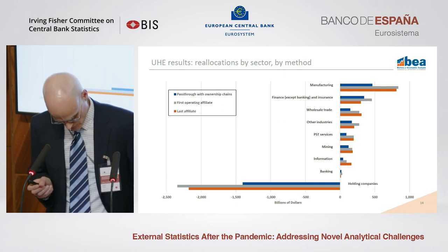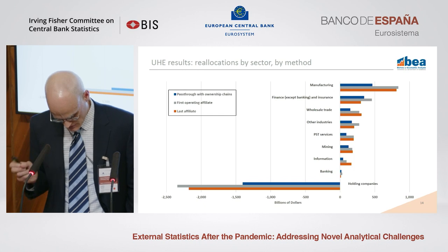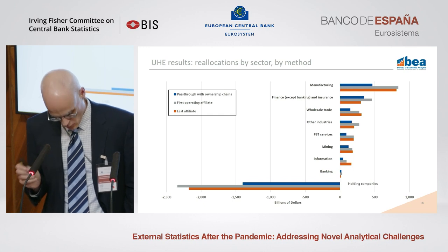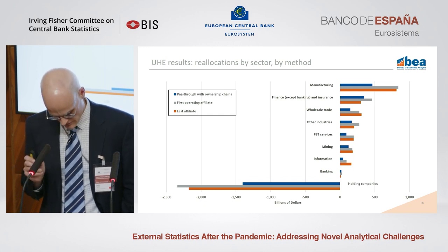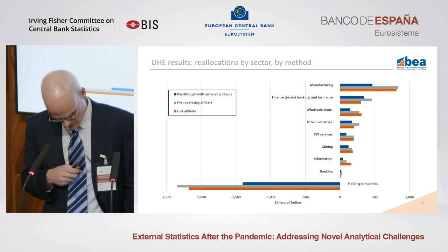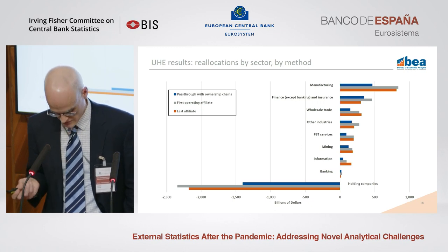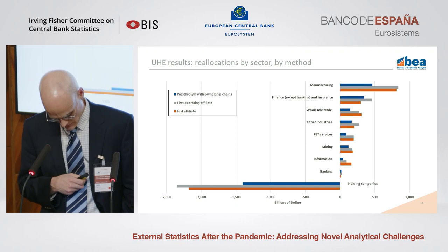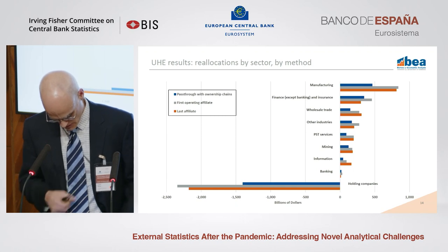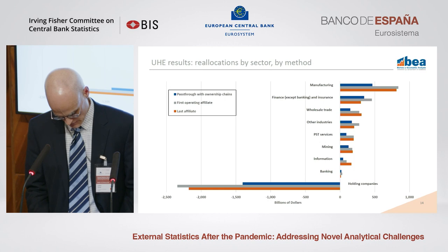At the sector level, as expected, holding companies saw the largest negative reallocation across all three methods — they were the only sector that saw a net decrease in position after reallocation — and affiliates in manufacturing tended to see the largest gains across all of the methods.